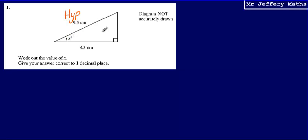We're going to label the side which is opposite the angle as opposite. And then we are going to label the side which is touching the angle but is not the longest side as the adjacent.